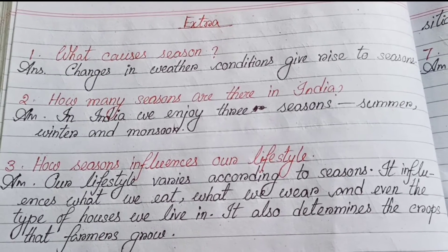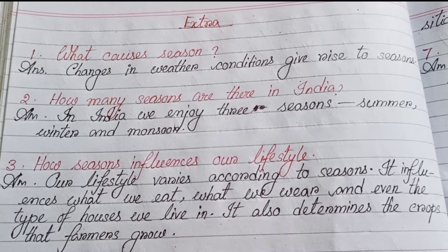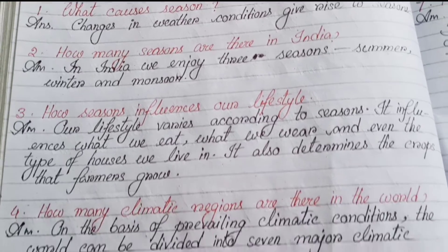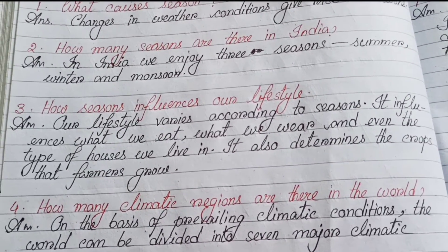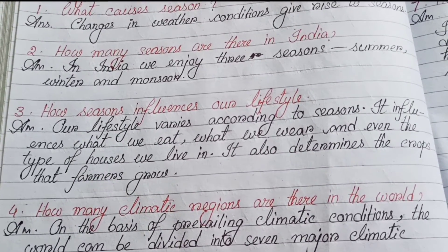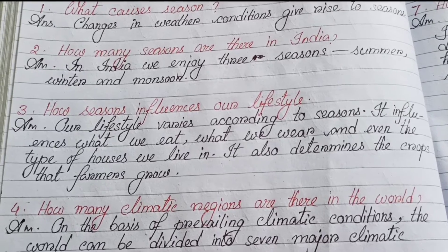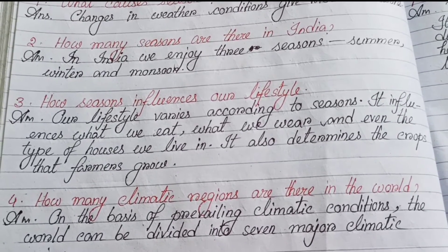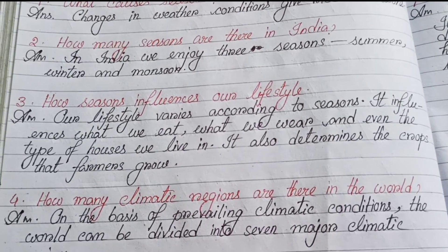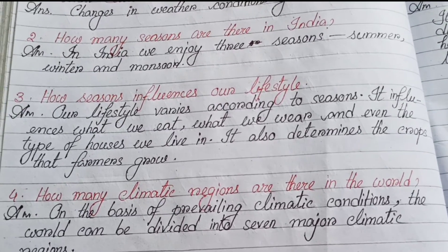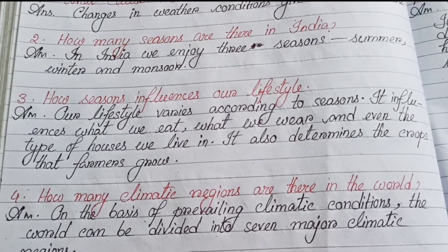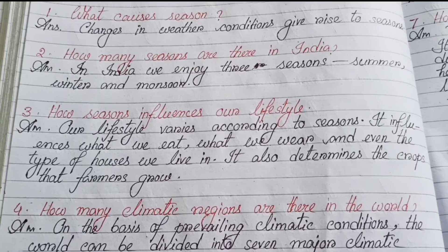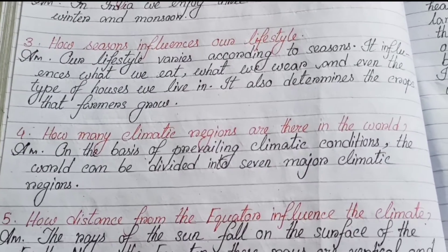Number one: What causes season changes? Changes in weather conditions give rise to seasons. Number two: How many seasons are there in India? In India we enjoy three seasons — summer, winter, and monsoon. Number three: How do seasons influence our lifestyle? Our lifestyle varies according to seasons — it influences what we eat, what we wear, and even the types of houses we live in. It also determines the crops that farmers grow.